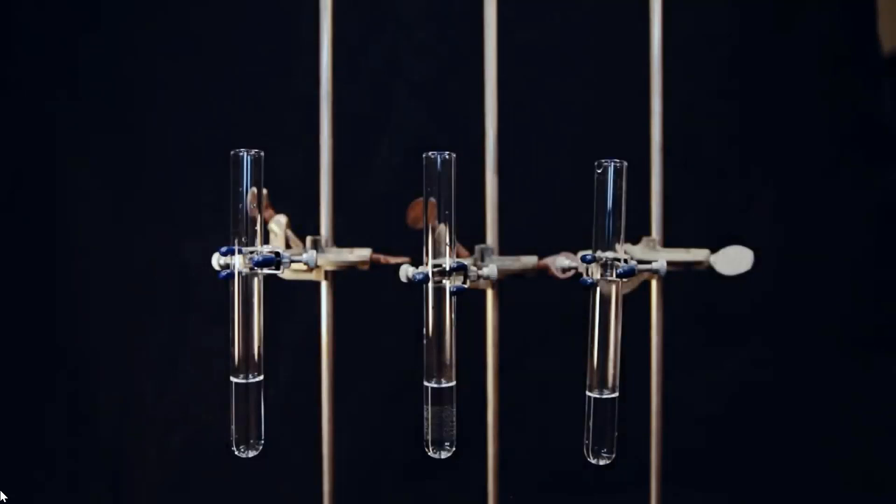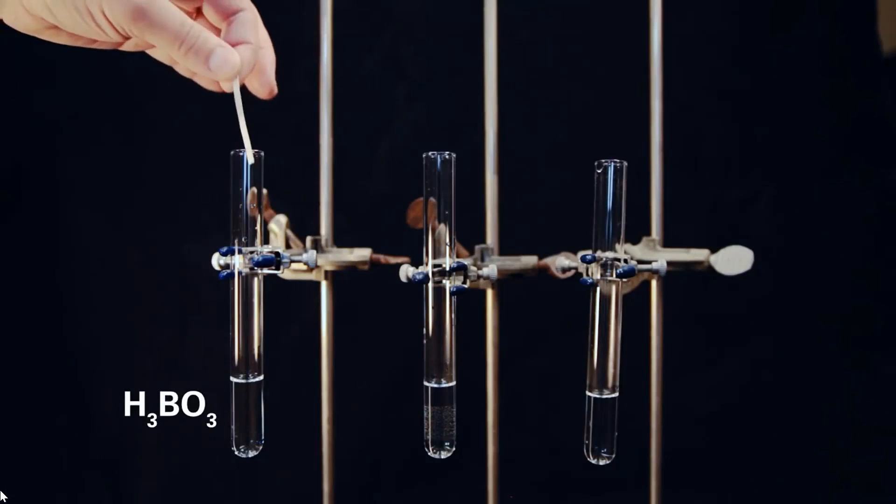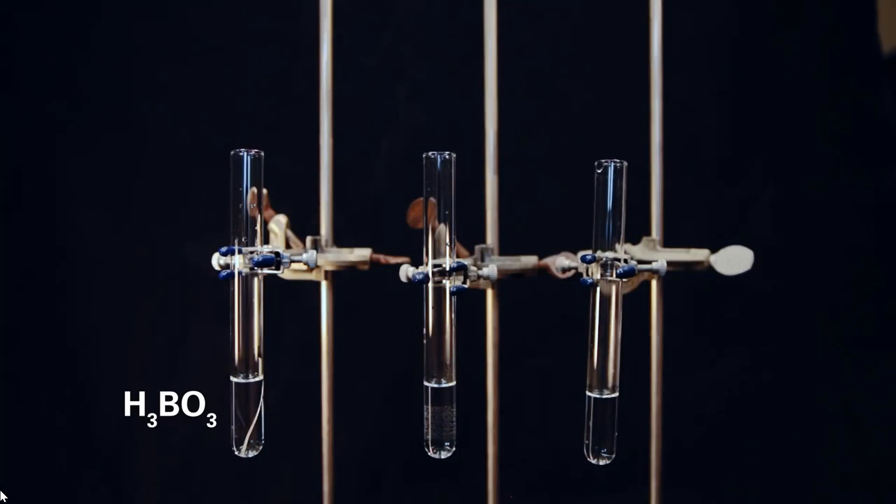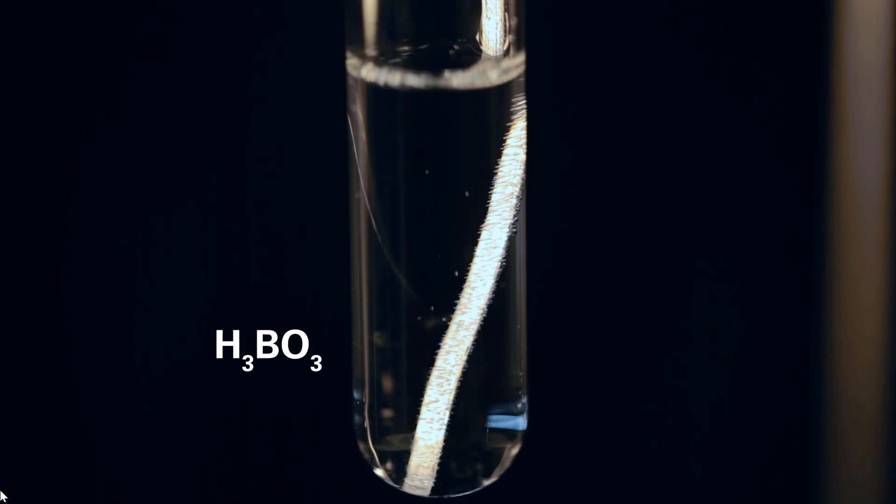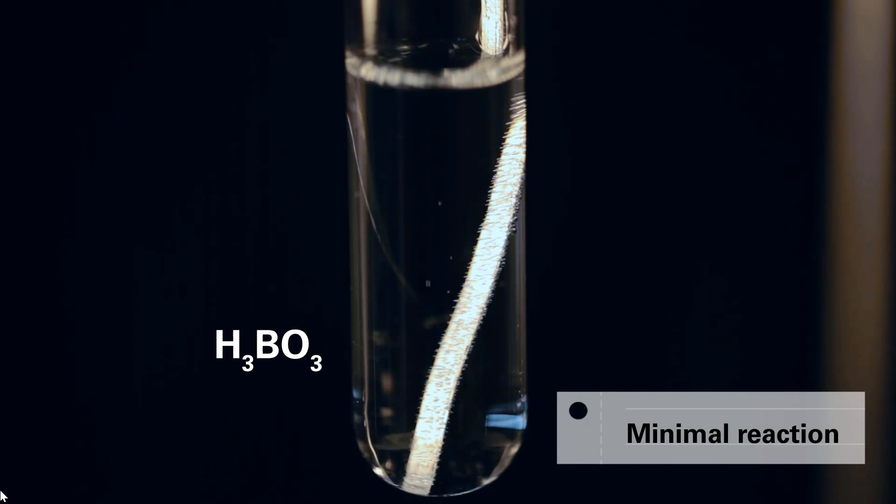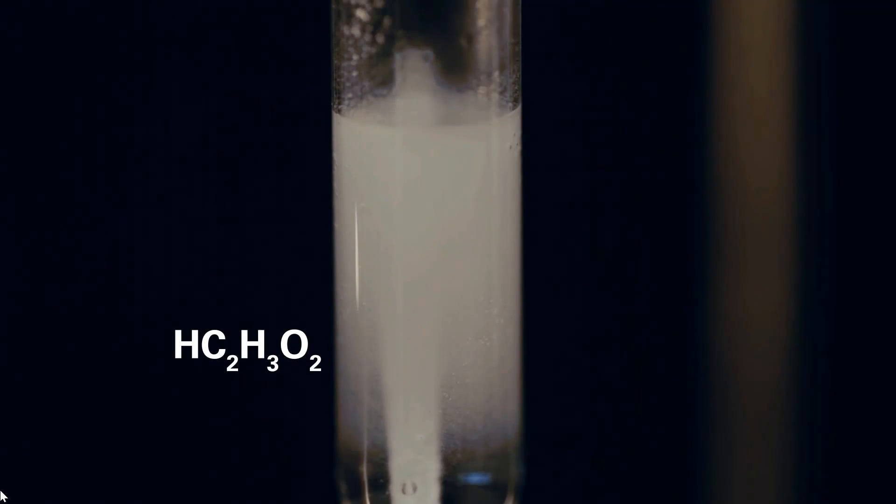This is a series of experiments to look at acid dissociation constants, or Ka. We're going to take a strip of magnesium and put them into each tube. The amount of reaction will depend on how much free hydronium ion is available to react. The first test tube contains boric acid. The next test tube contains acetic acid. This test tube, with the boric acid, has very few hydrogen bubbles forming on the magnesium strip. In fact, it's hardly bubbling at all.